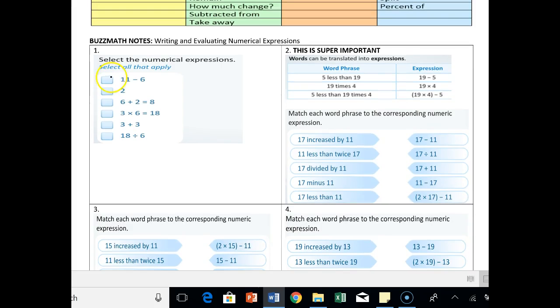So 11 minus 2, good. 2, it does not have an operator. So it's not an expression, no operations. It's got to contain numbers, operations, or grouping symbols. So no.